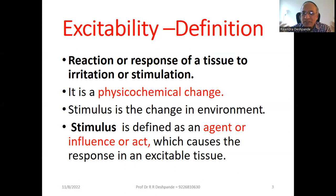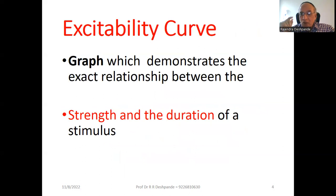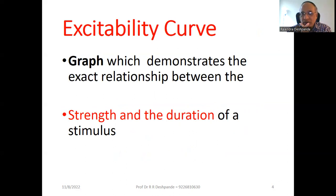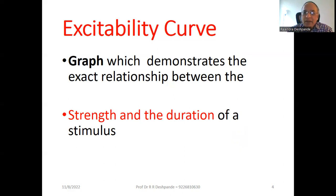Stimulus is an agent, an influence, an act which causes a response in an excitable tissue. Here we are talking about skeletal muscle, so there will be a change in the skeletal muscle. The excitability graph is very important — it demonstrates the exact relationship between the strength of stimulus and the duration of stimulus. I have a separate video for this excitability curve, so please check my playlist of physiology and Kriyasharir for that topic.